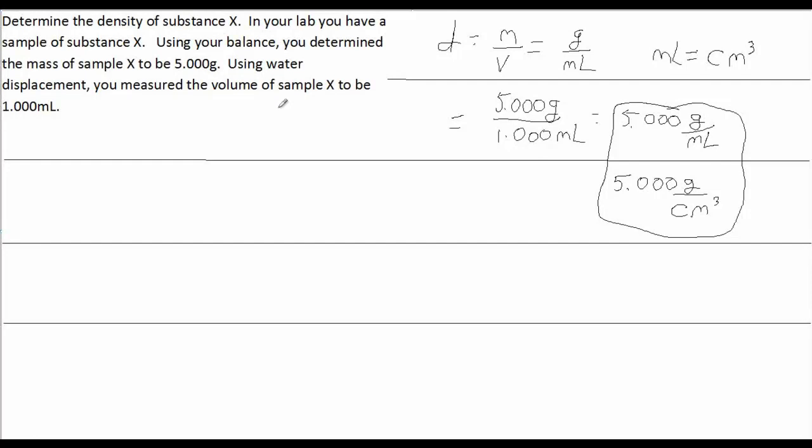That's the first kind of density problem, to simply calculate the density using given information that was determined in a lab. Next, we have a problem where we're asked to determine the volume of a particular sample. In this kind of problem where we're asked to determine the volume given a particular mass of a substance, we could use density as a conversion factor.